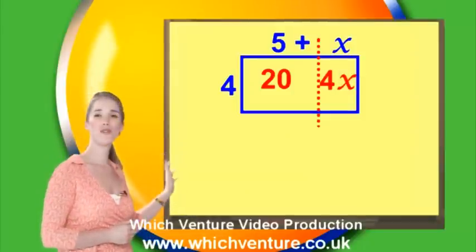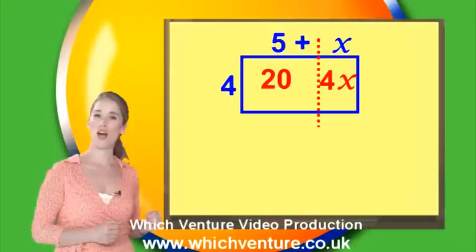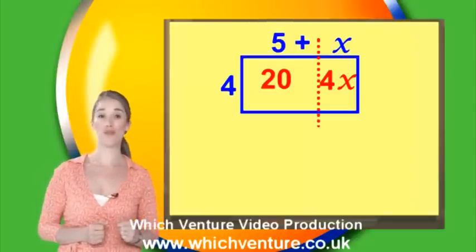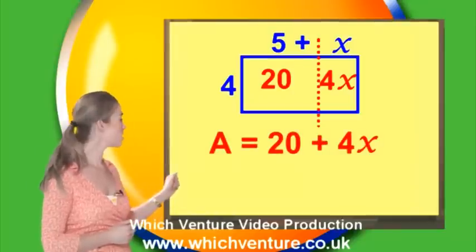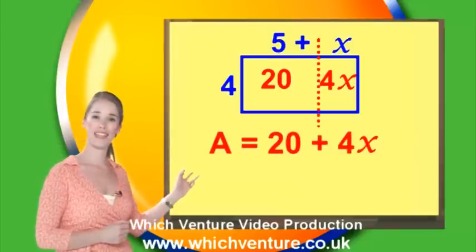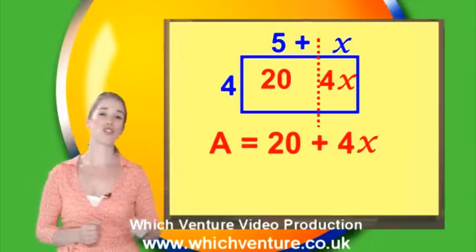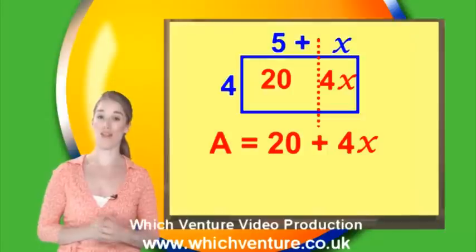So looking at these two sections of the rectangle, another expression for the total area would be 20 plus 4x. Now we have two different expressions for the area of this rectangle. Have a look at these and see what you notice about them.